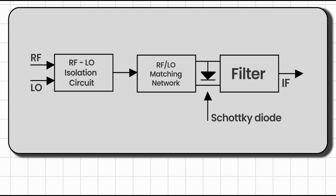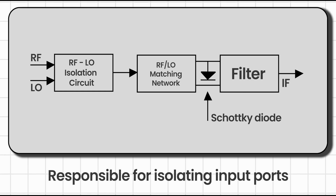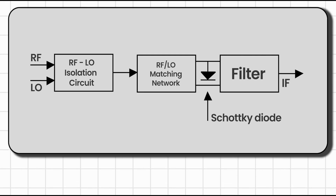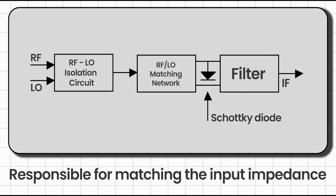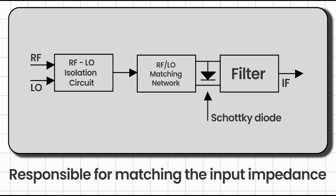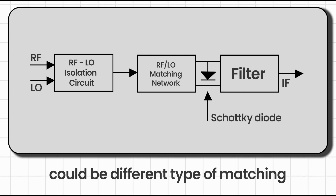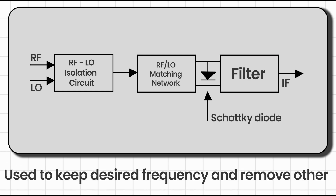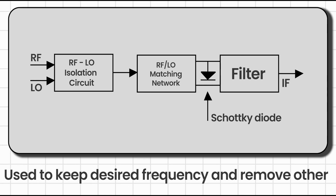The RF-LO isolation circuit is responsible for isolating the RF input and LO frequency input signals. The matching network is responsible for matching the input impedance of the DC-biased diode circuit with the output impedance of the RF-LO isolation circuit, so both ports are impedance-matched. We'll understand how to design the matching network in the next step. Finally, the filter block keeps the desired output frequency and rejects all other frequencies and spurs.